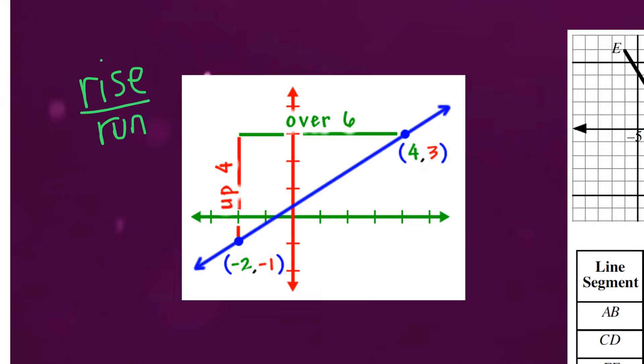Well to move from one point to the next you can see we're moving here from (-2, -1) to (4, 3). We're rising up a certain number of points and we're running to the right. So to help you remember that just think of like the sunrise. The sun rises up and down and then when you're running you would run left to right.